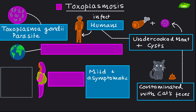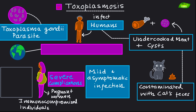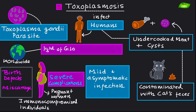Most healthy individuals experience mild or asymptomatic infections. However, toxoplasmosis can cause severe complications in immunocompromised individuals and in pregnant women, leading to birth defects or even miscarriage. Toxoplasma is prevalent worldwide, with an estimated one-third of the global population affected — making it a very complicated scenario especially during pregnancy.